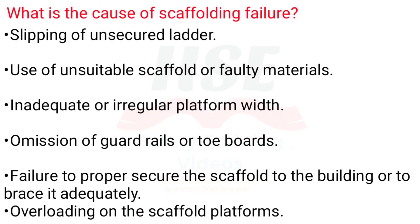What are the causes of scaffolding failure? Slipping of unsecured ladders, use of unsuitable scaffold or faulty materials, inadequate or irregular platform width, omission of guard rails or toe boards, failure to properly secure scaffold to the building or to brace it adequately, and overloading on scaffold platforms.